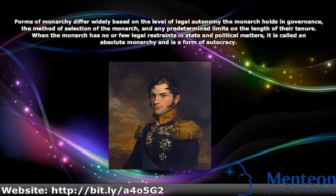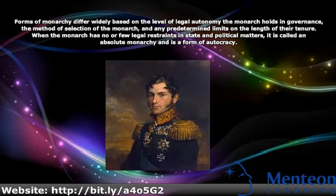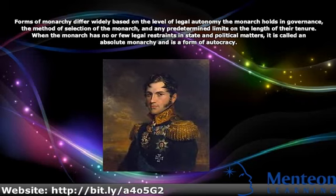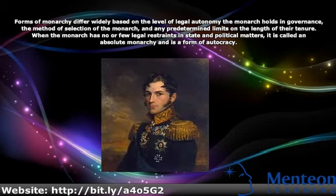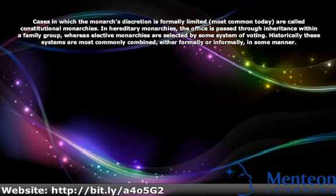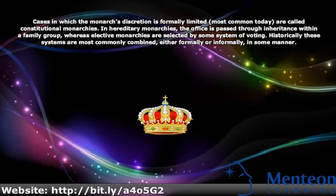When the monarch has no or few legal restraints in state and political matters, it is called an absolute monarchy and is a form of autocracy. Cases in which the monarch's discretion is formally limited, most common today, are called constitutional monarchies. In hereditary monarchies, the office is passed through inheritance within a family group, whereas elected monarchies are selected by some system of voting.